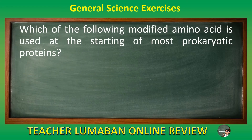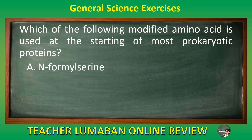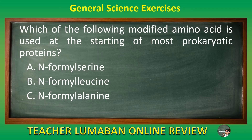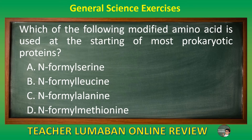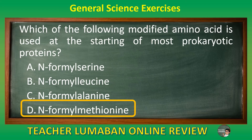Which of the following modified amino acids is used at the starting of most prokaryotic proteins? Letter A N-formylserine. Letter B N-formylleucine. Letter C N-formylisoleucine. Letter D N-formylmethionine. The correct answer is letter D, N-formylmethionine. N-formylmethionine is a modified amino acid that is used at the starting of most prokaryotic proteins.